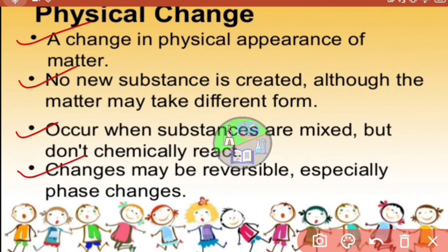Physical change occurs when substances are mixed but don't react chemically. And the change or physical change may be reversible, especially the phase or the state changes.